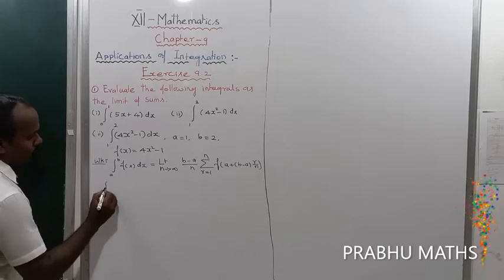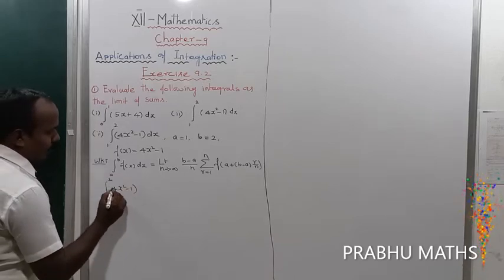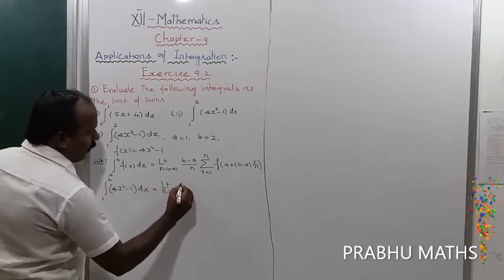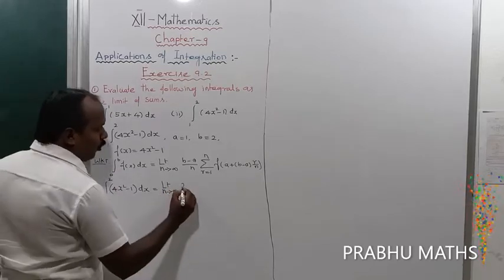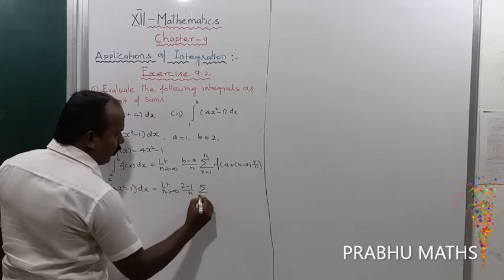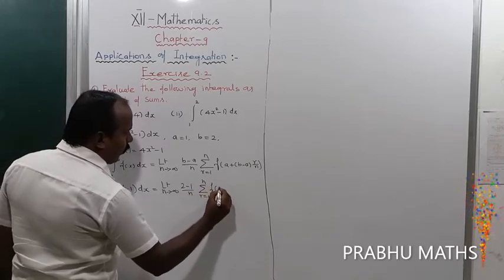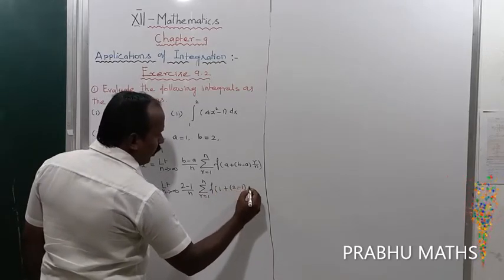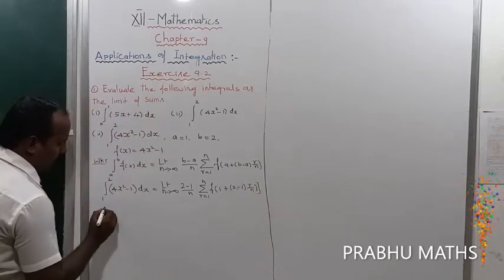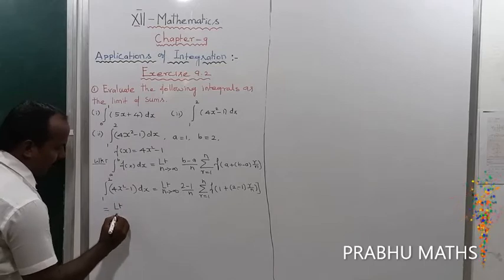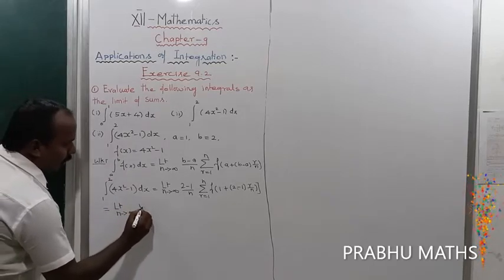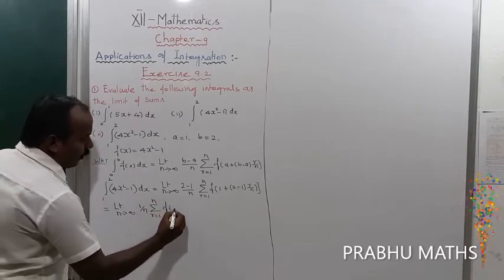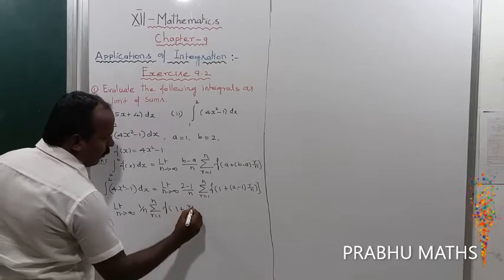The integral from 1 to 2 of (4x² - 1) dx is equal to the limit as n tends to infinity of (2 minus 1) divided by n, times the summation from r equals 1 to n of f of 1 — since a equals 1 — plus (2 minus 1) times r divided by n. That gives us: limit n tends to infinity of (1/n) times the summation from r equals 1 to n of f(1 + r/n).